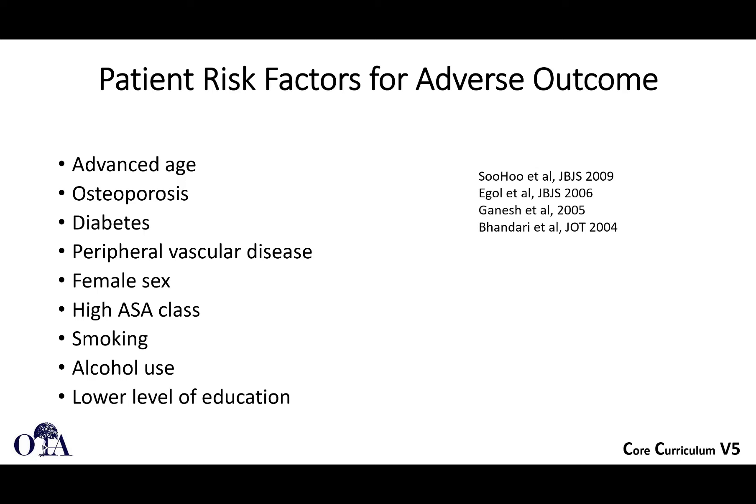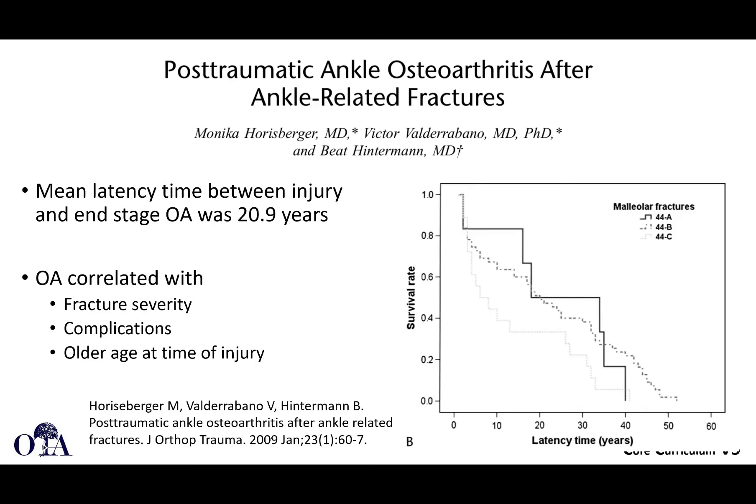What predicts poor outcomes? Advanced age, osteoporosis, diabetes, peripheral vascular disease, female sex, higher ASA class, smoking, alcohol use, lower level of education — as reported in multiple studies.